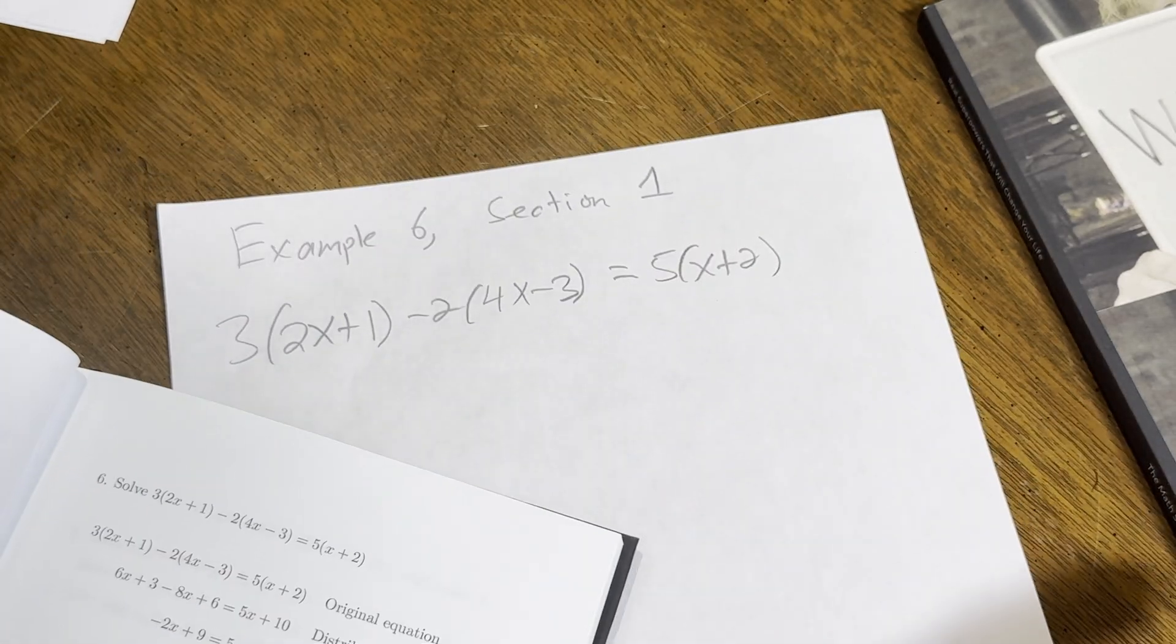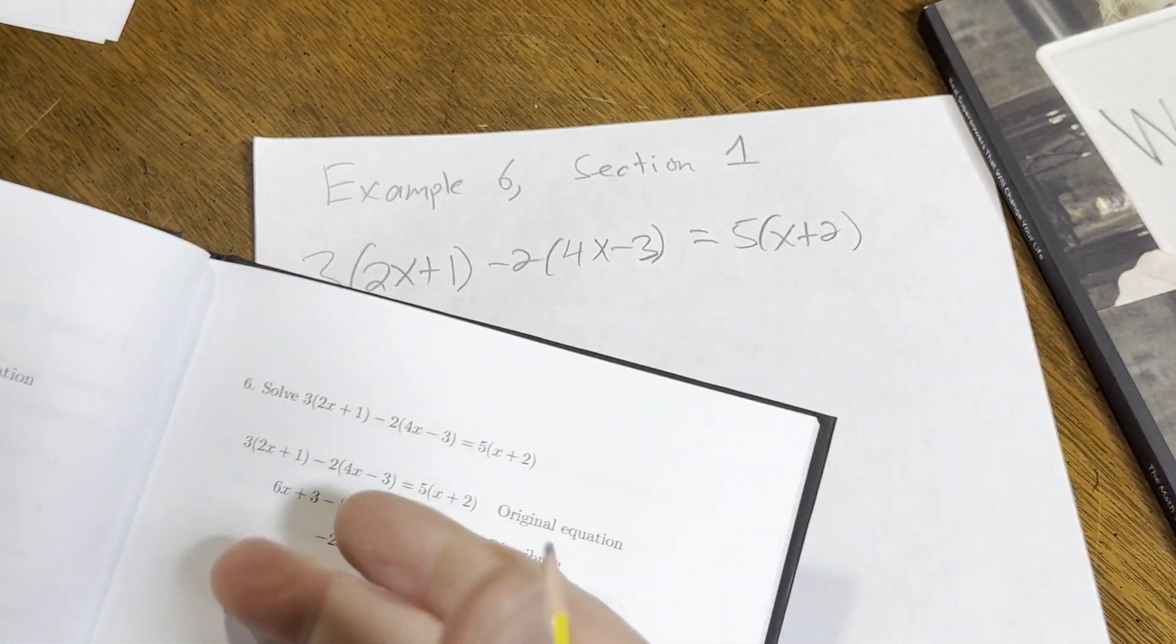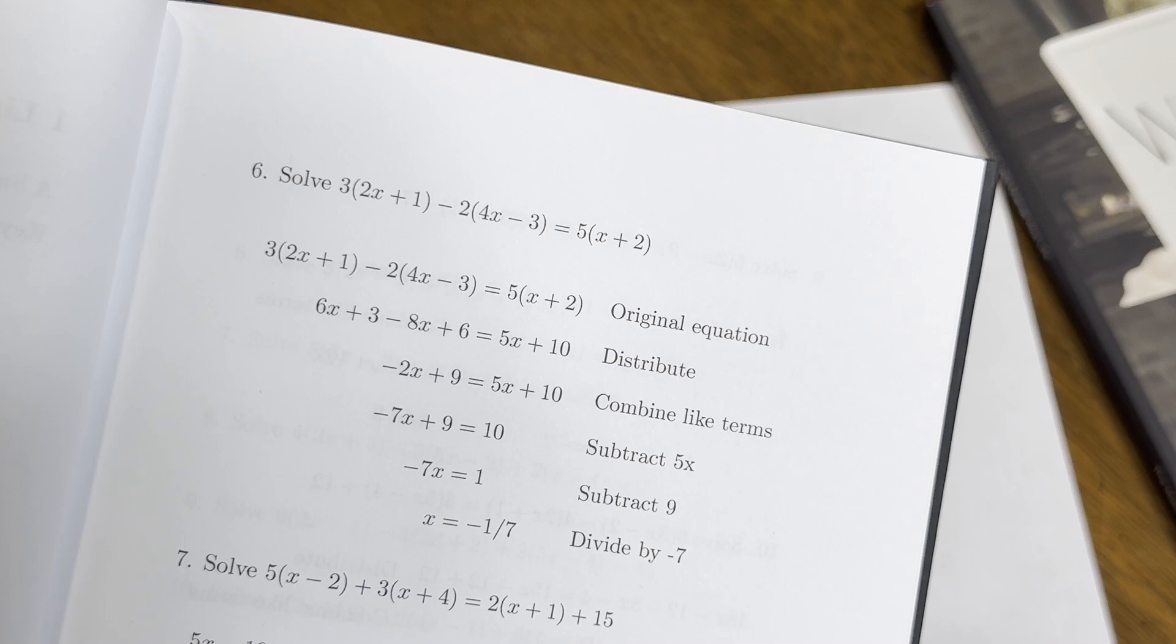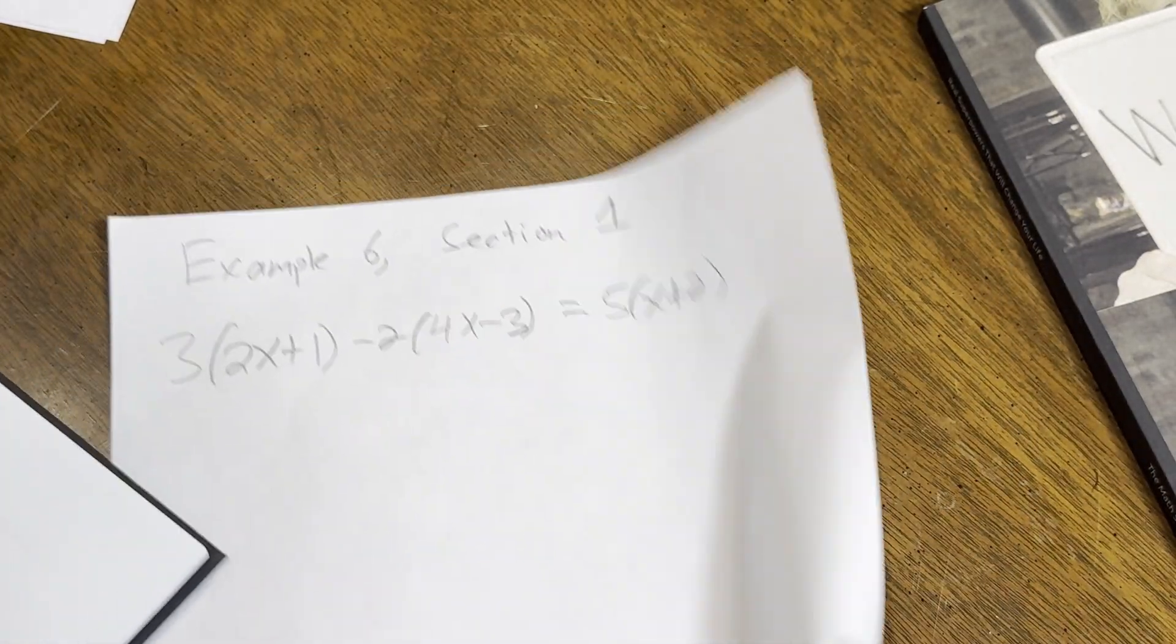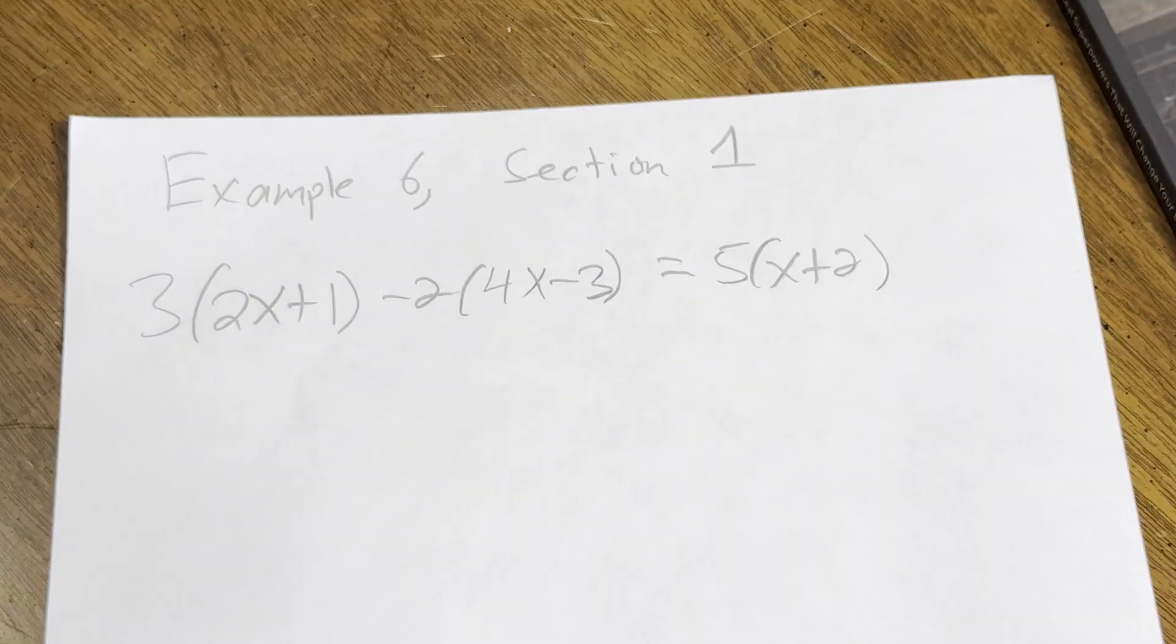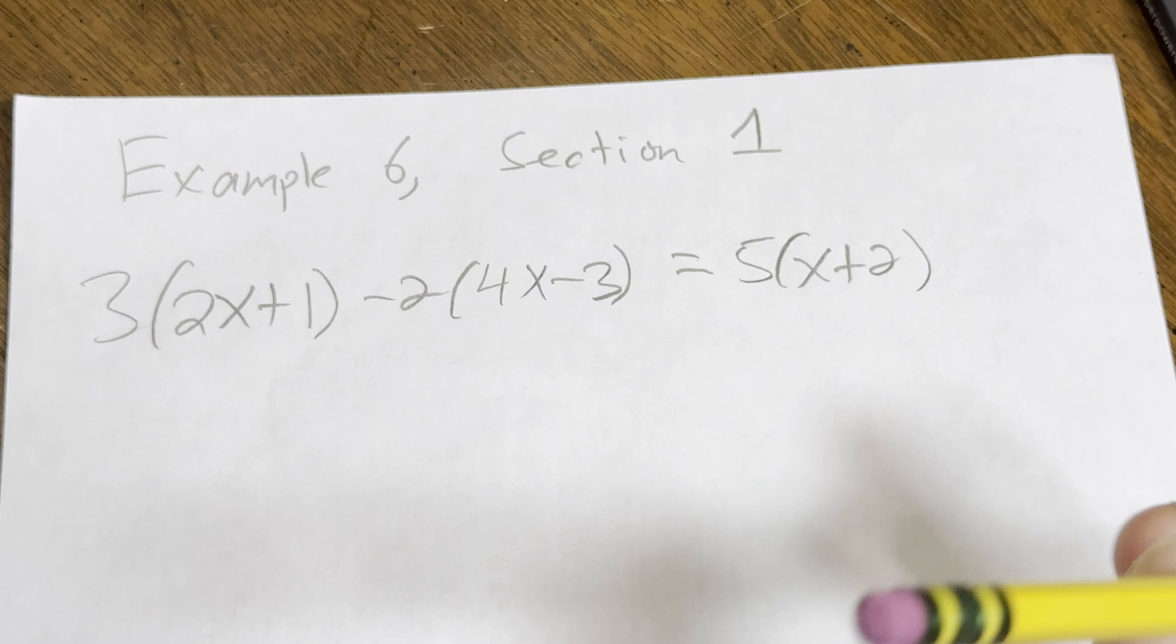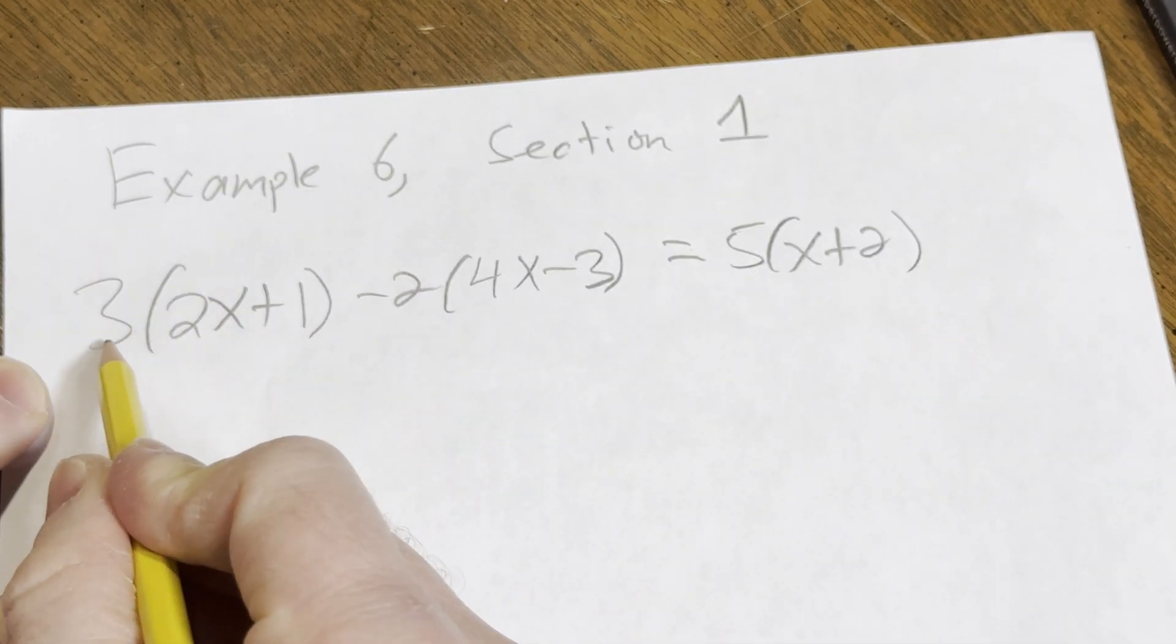I thought I would just do this example here from the book. As you can see here, let's do it just to make sure. Maybe you bought the book and you don't get it, or maybe you're just trying to learn linear equations. So we'll start by distributing these numbers here in front of the parentheses.